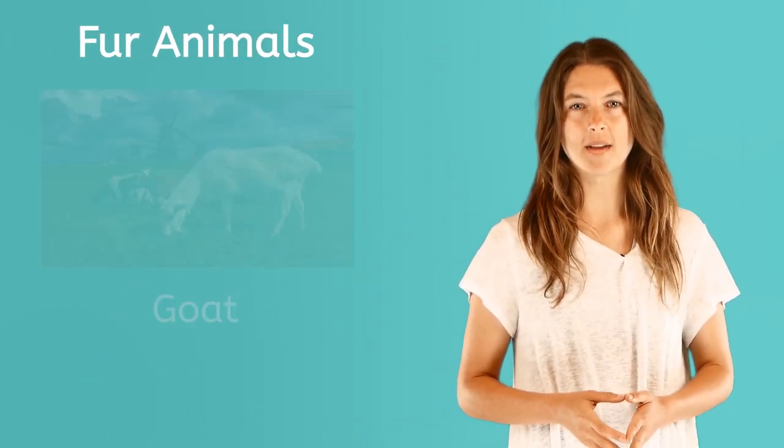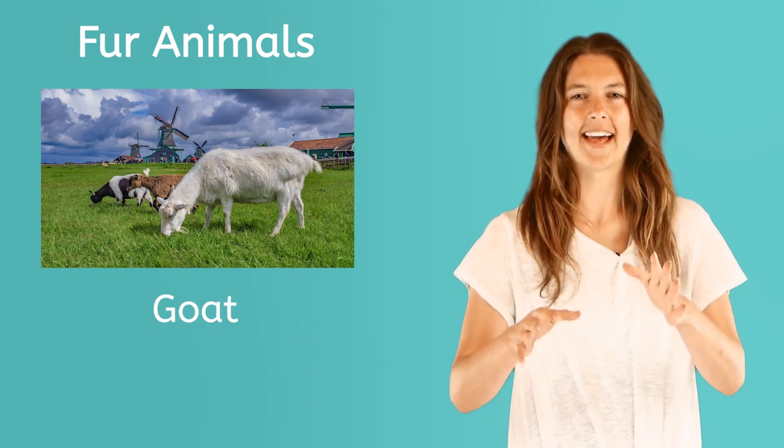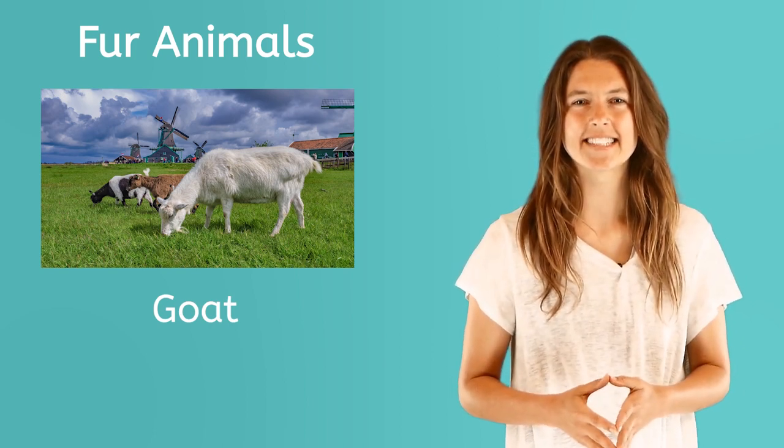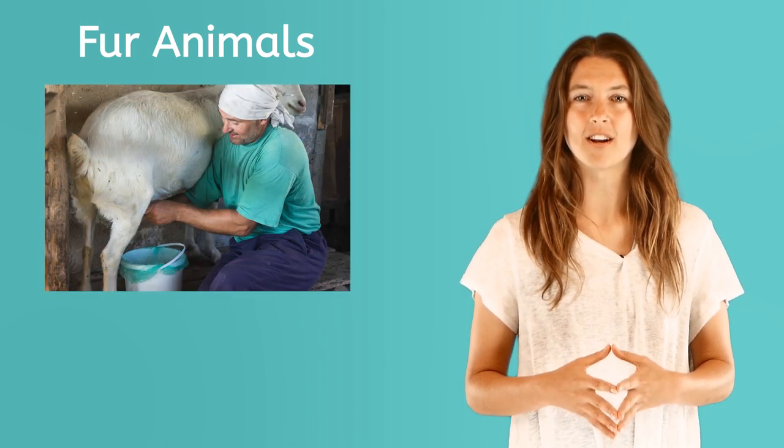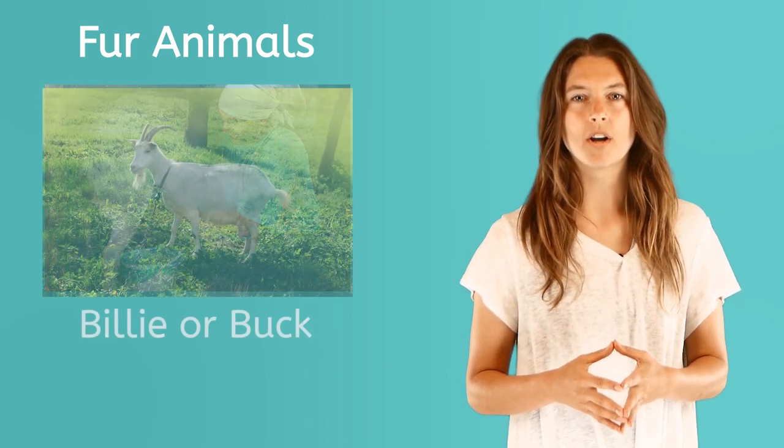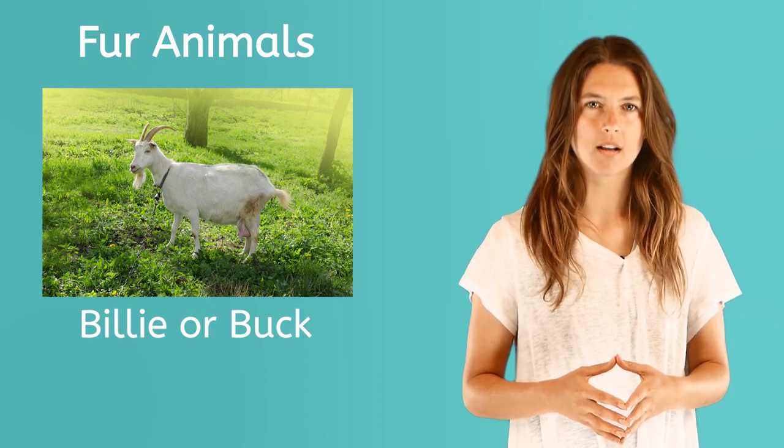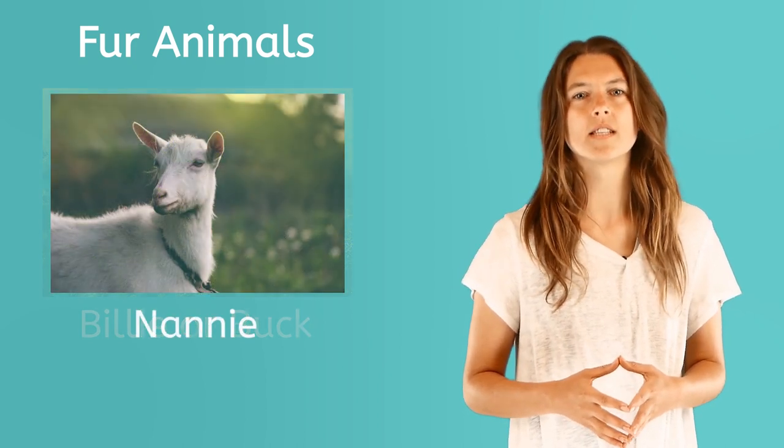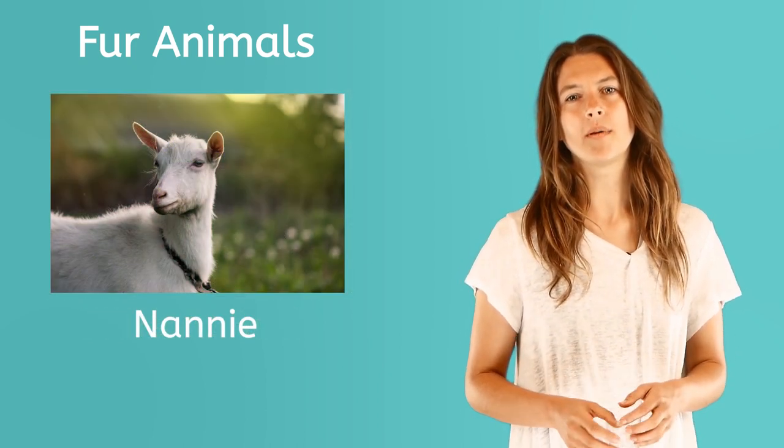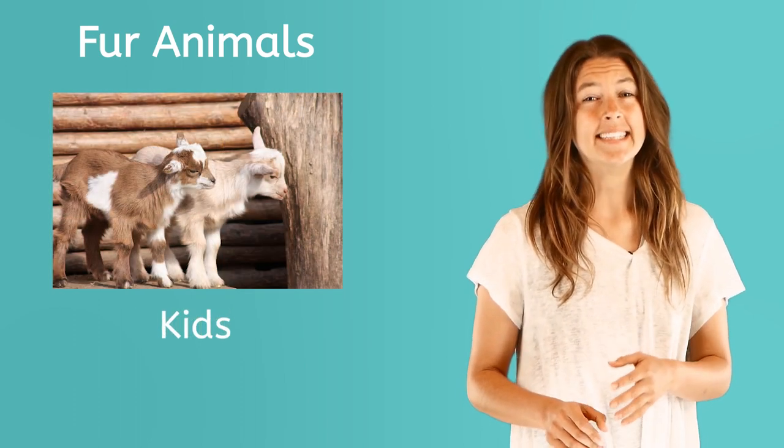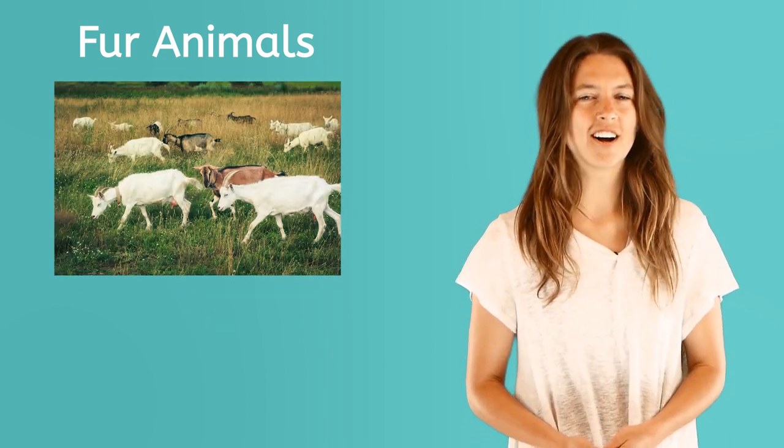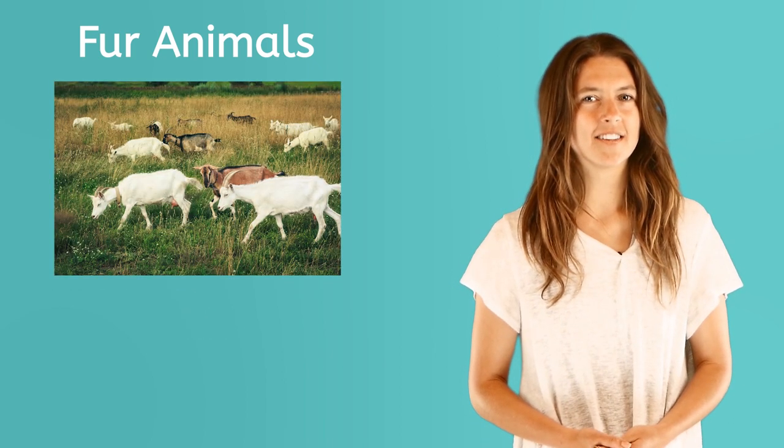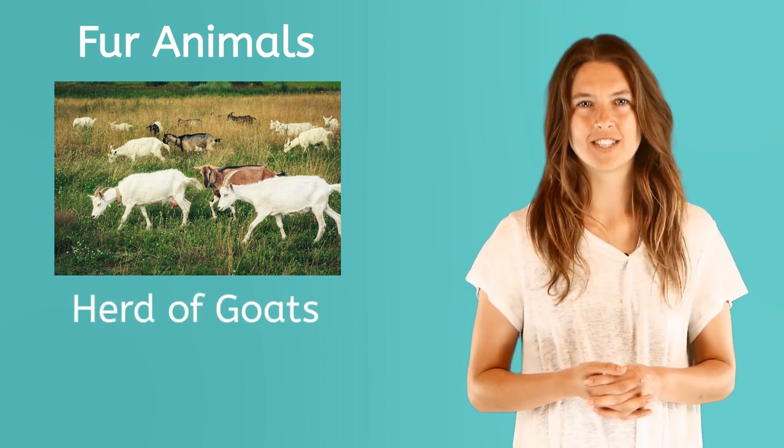Another animal you can find on a farm is a goat. Mee! Just like sheep, goats also graze the land. Did you know that we can also get milk from a goat? The male goat is called a billy or a buck. A female goat is called a nanny and a baby goat is called a kid, just like you. Can you guess what a group of goats are called? They're called a herd, just like horses.